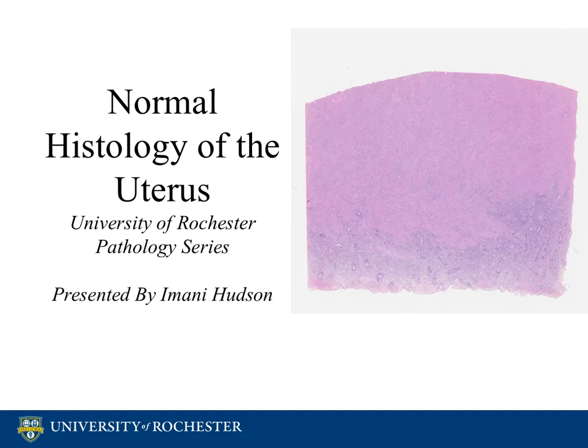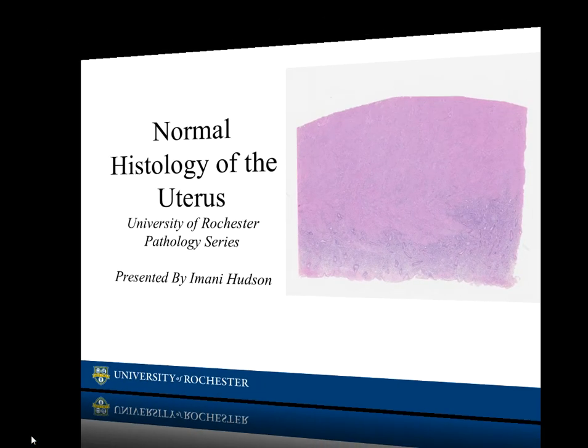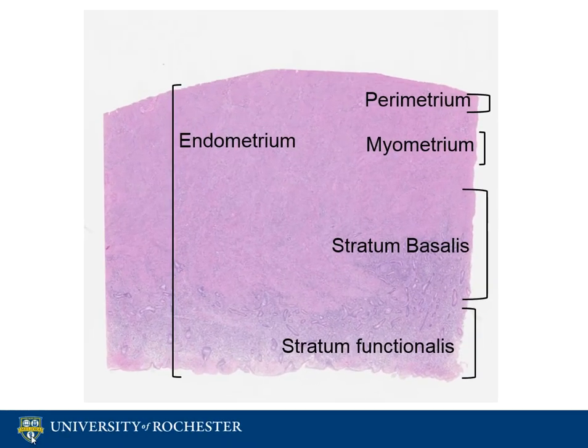First, let's discuss some general info before we dive deeper. This right here is the endometrium, which has two layers: the stratum functionalis and the stratum basalis. Underneath the endometrium, as you can see, is smooth muscle, which is the myometrium. Last is the perimetrium, which is the outer surface of the uterus.